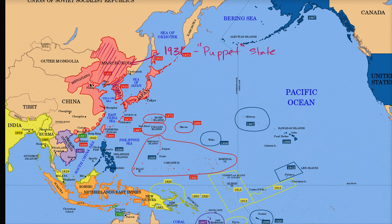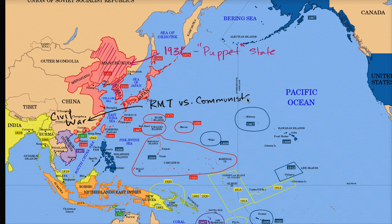We need to remember what is happening in China in the 1930s. China is embroiled in a civil war — between the nationalists, the Kuomintang, and the communists. The communists led by Mao Zedong, the Kuomintang led by General Chiang Kai-shek. And so they're in the midst of a civil war.